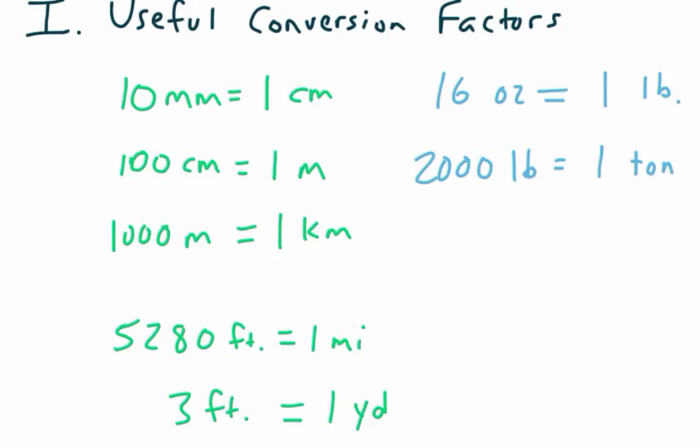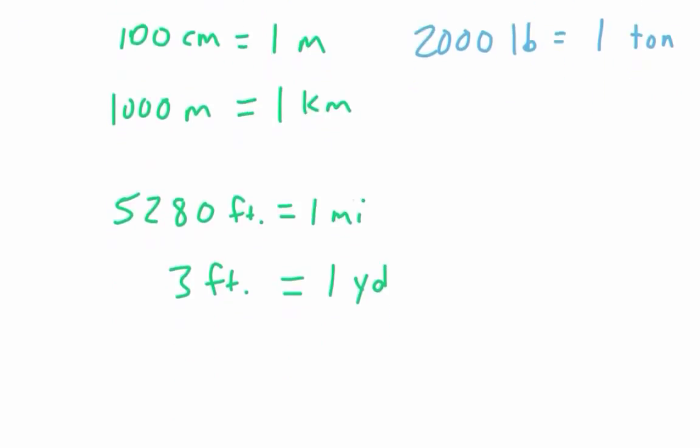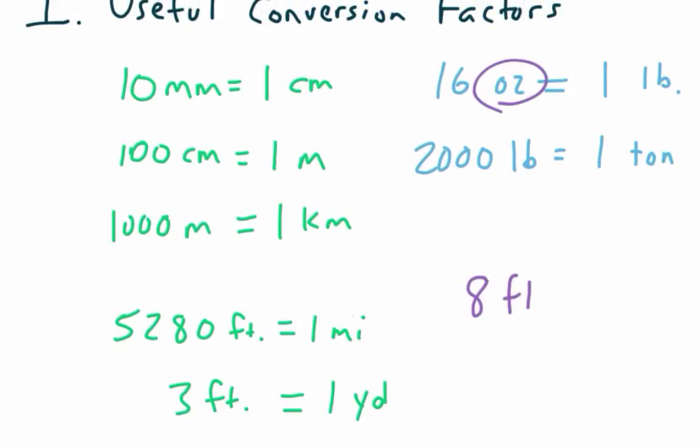My last little section is going to be volume. And when you're cooking, you often use cups. So I'm going to say 8 ounces. Now here's the problem. We did 16 ounces up there for weight. We also have ounces for volume. So often they'll do like 8 FL and then an OZ. So 8 fluid ounces equals 1 cup.